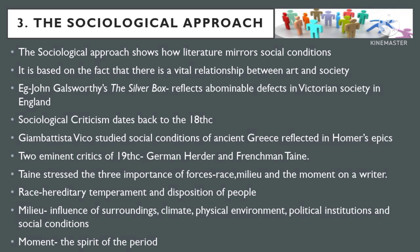Sociological criticism is not a 20th century development. It dates back to the 18th century when Giambattista Vico, an Italian philosopher and historian, studied how social conditions of ancient Greece are reflected in Homer's epics. During the 19th century, there were two eminent sociological critics: the German Herder and the Frenchman Taine. Taine's aim was to study the effect of social conditions on a writer. Taine stressed the importance of three forces: the influence of race, milieu, and moment on a writer.